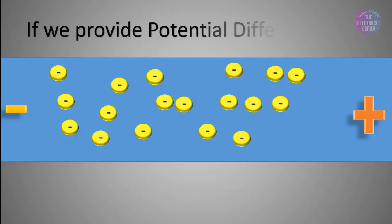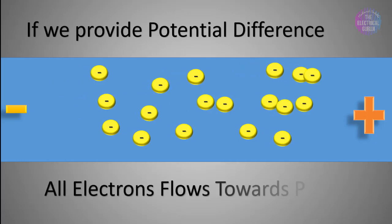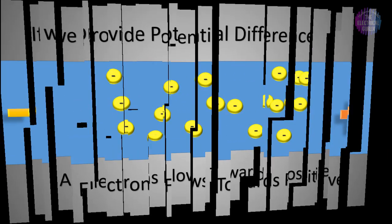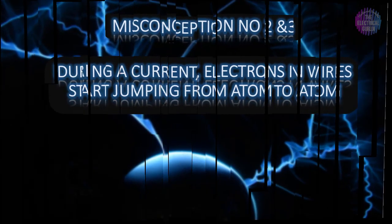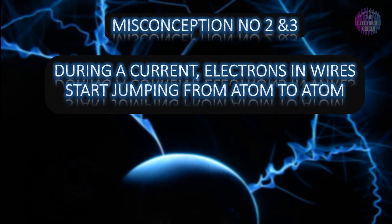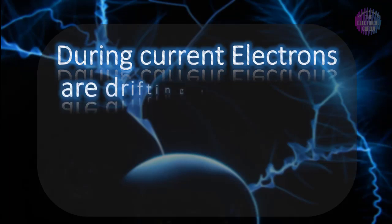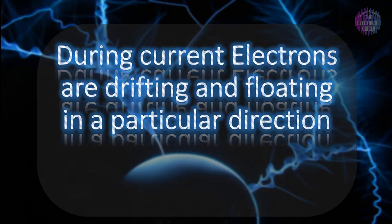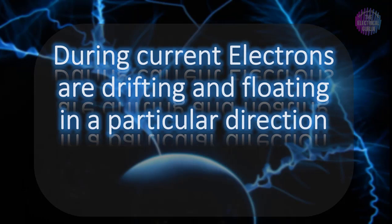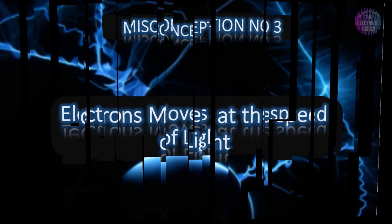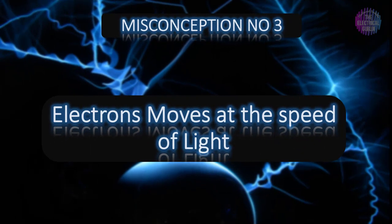But if the conductor is placed in an electric field, all electrons start to flow towards positive potential and then current gets produced. That's why during current flow, electrons don't jump from atom to atom; instead, electrons are drifting and floating in a particular direction. This leads to the third misconception: that electrons actually move at the speed of light.